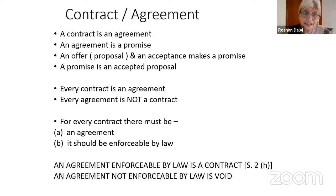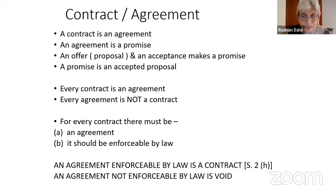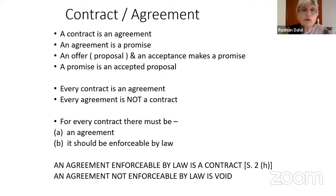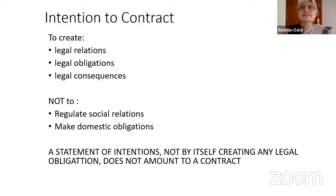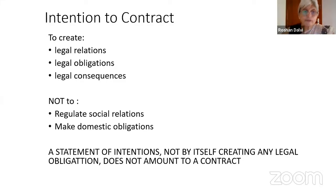For every contract, there must be an agreement, and that agreement should be enforceable by law — not like going out to dinner. An agreement which is not enforceable at law, or which may be an unenforceable agreement, would be a void agreement. In a contract, there must be an intention — the intention to create legal relations, legal obligations, and legal consequences of that agreement. Once that is done, somebody can come to a court of law or an arbitration for its adjudication.